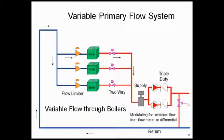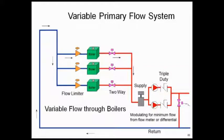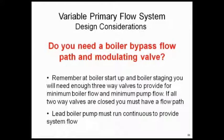Bringing this all together with the piping diagram: going back to the variable primary pump schematic, we've added flow limiters — each boiler has a flow limiter so I can set the maximum allowable GPM through that boiler and won't hurt it. The second thing added is a two-way valve — each boiler has its own individual automatic two-way valve, timed to open and close as discussed, so when a boiler is not firing we can isolate it. You'll also see two pumps and a modulating bypass valve. If you don't use three-way valves, the bypass provides a flow path when all the two-way valves on your heating coils are closed, maintaining minimum flow through the boiler and for the pumps.